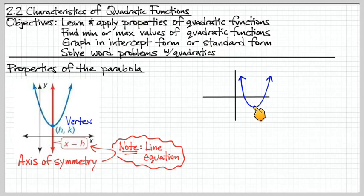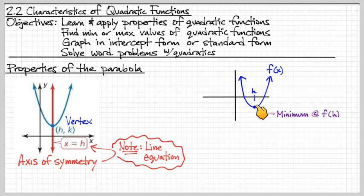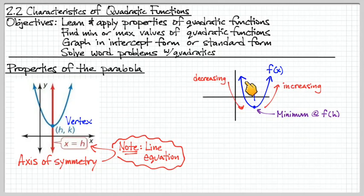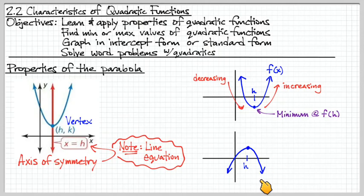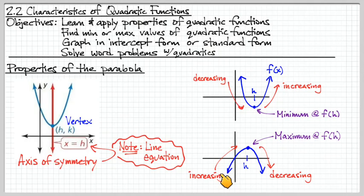Given an upward parabola, the vertex is going to be the lowest point of the curve, so we say the minimum value is at f(h), where h is the x-coordinate of the vertex. The portion of the graph which is decreasing goes from left to right — we're decreasing here, then increasing on the other side. When we have a downward parabola, the vertex is again a key point, but in this case it's the maximum value. So the maximum value occurs at f(h), and the increasing portion is here, followed by the decreasing portion.